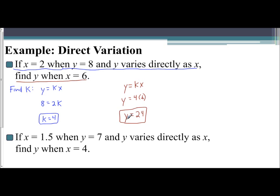So the first part of the sentence gives you the information you need to find your constant of variation, to find k. The second part, you use that k value with the values given to you to solve for the unknown variable.